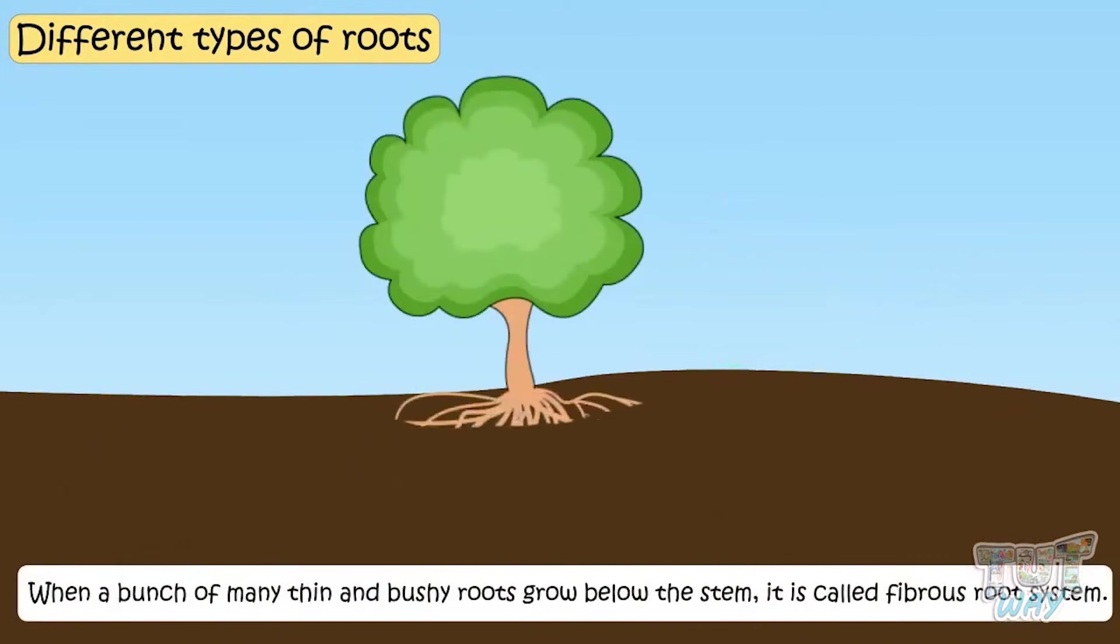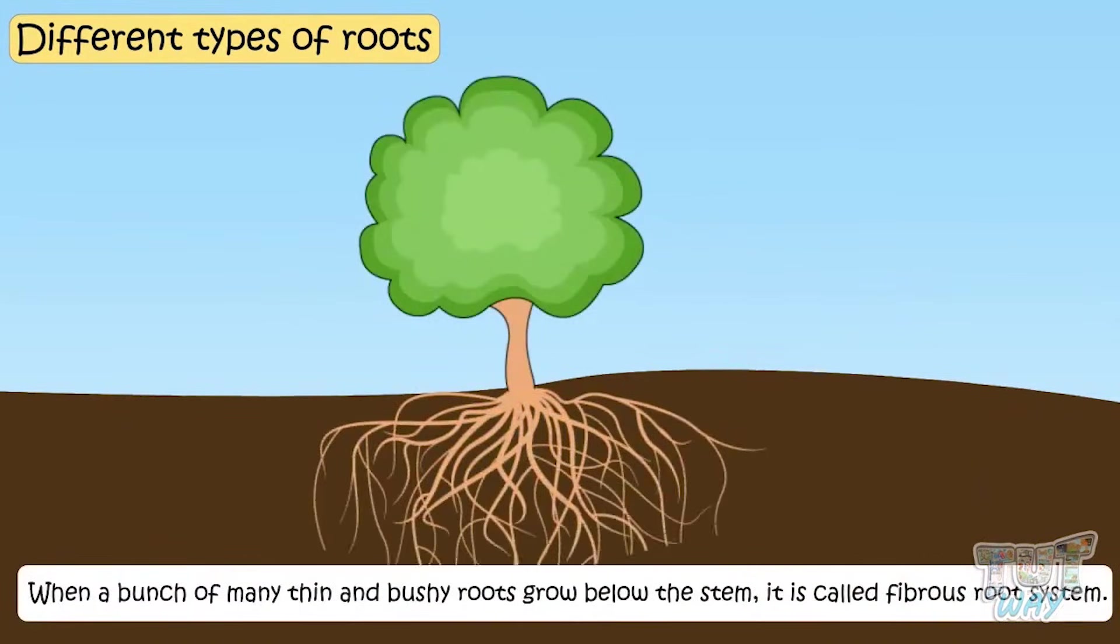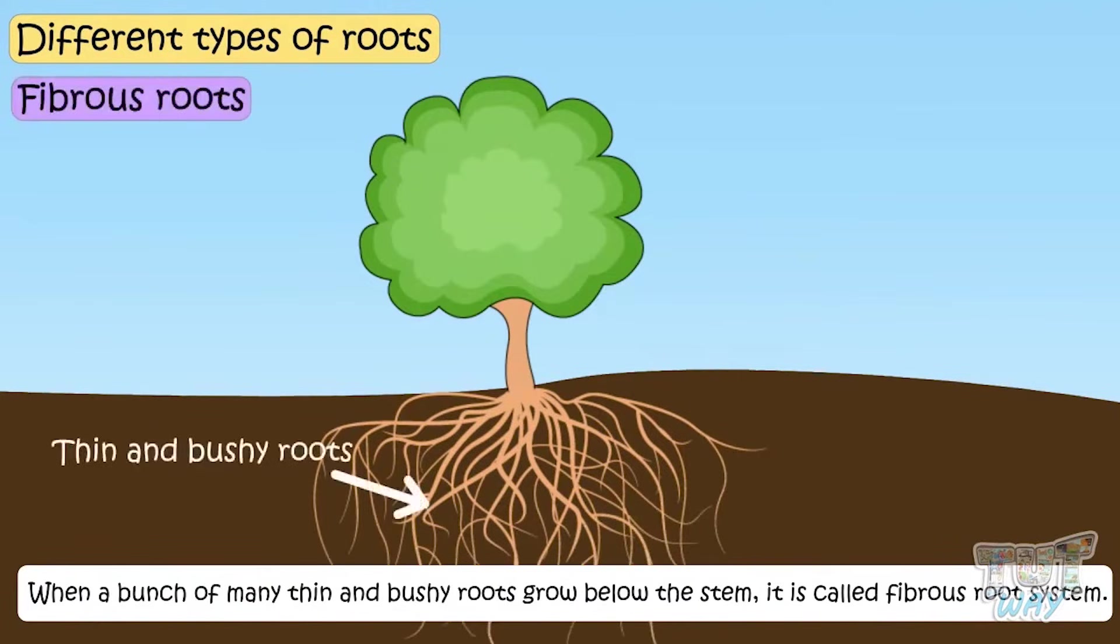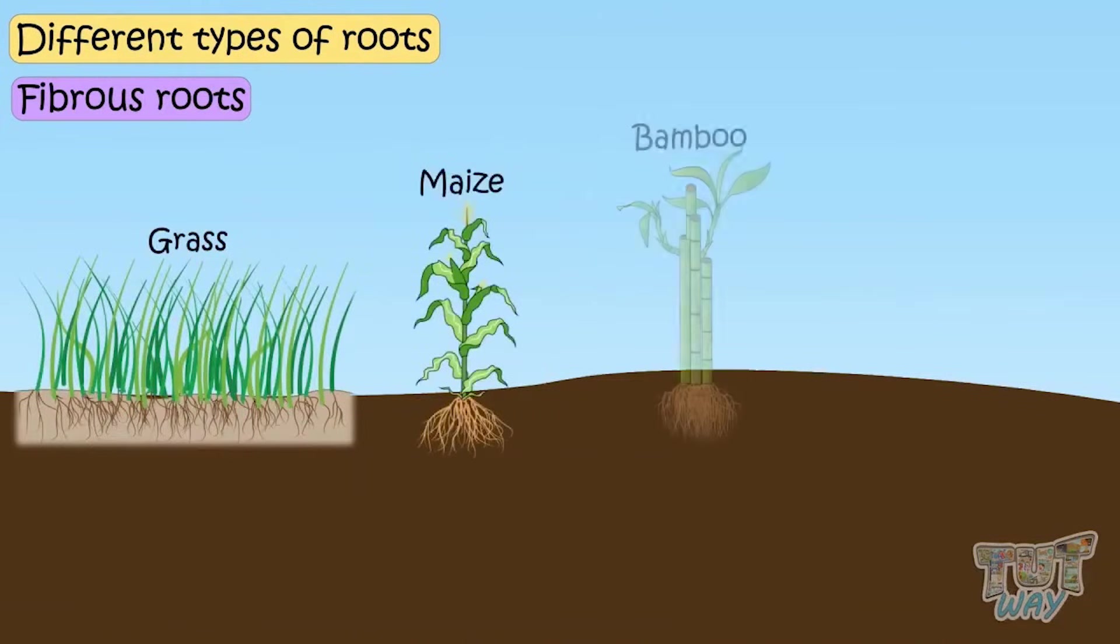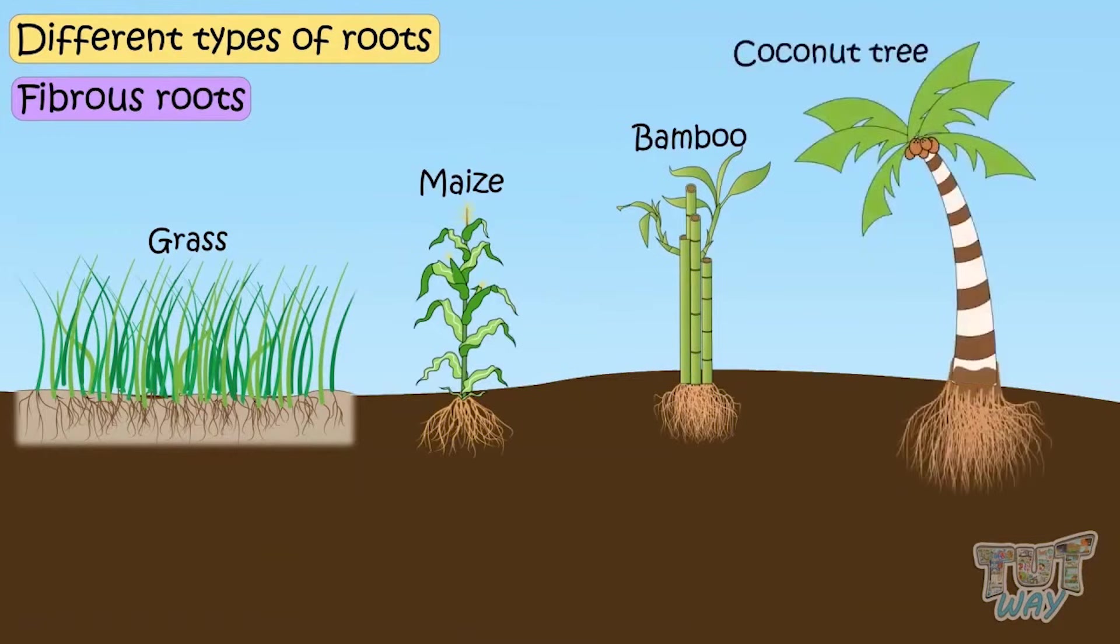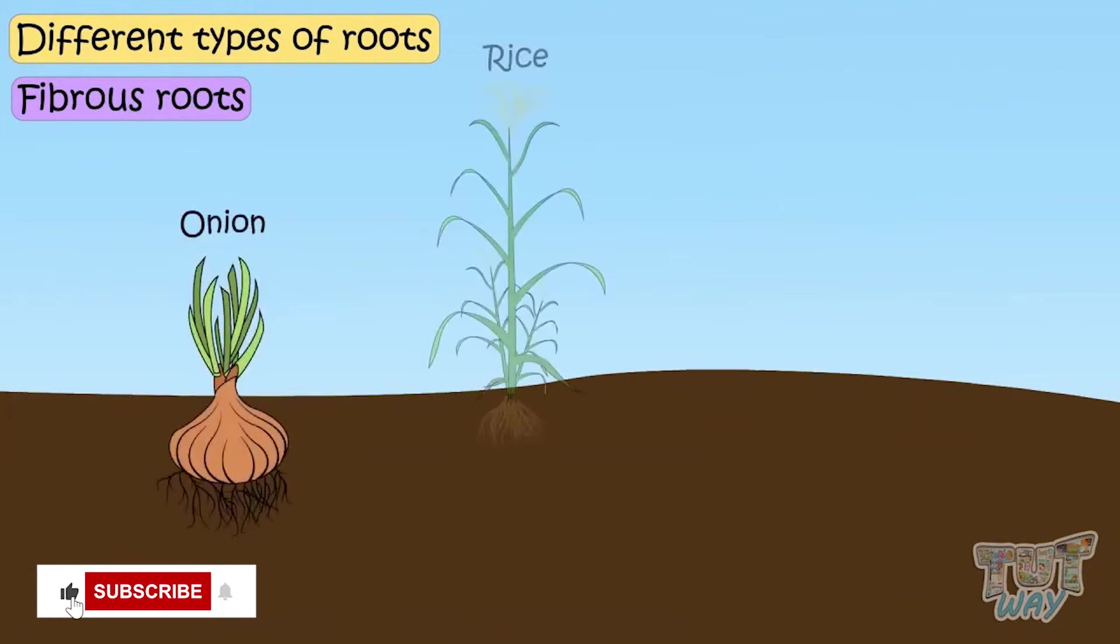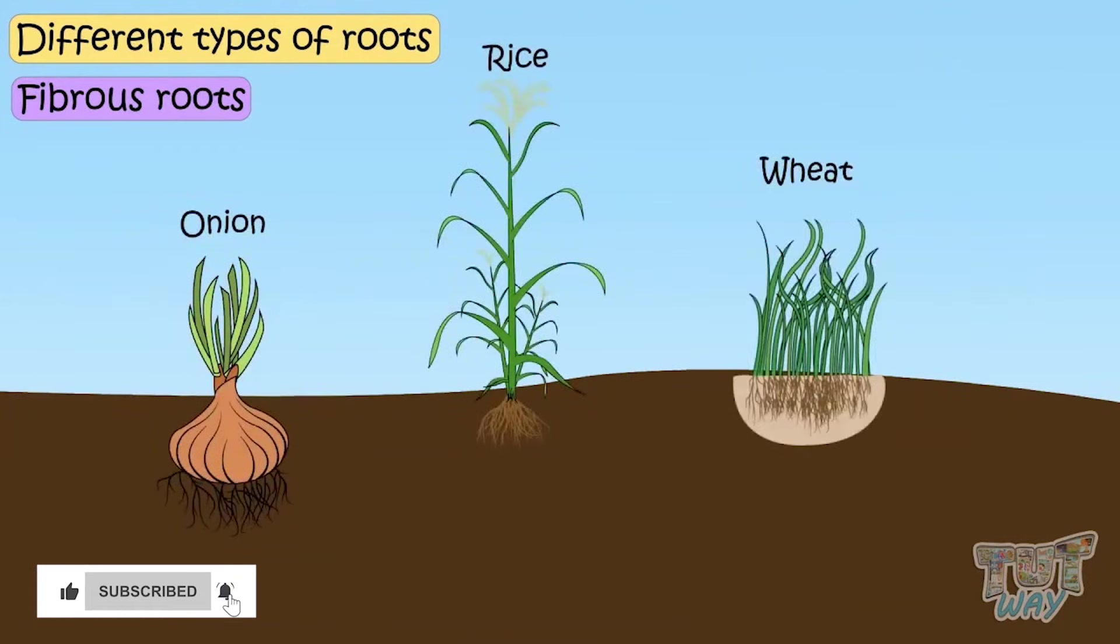When a bunch of many thin and bushy roots grow below the stem, it is called fibrous root system. These thin and bushy roots are nearly equal in size. Grasses, maize, bamboo, coconut tree, onion, rice and wheat are the plants that have fibrous roots.